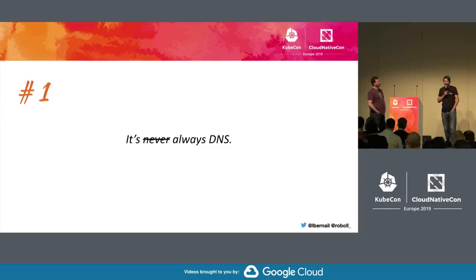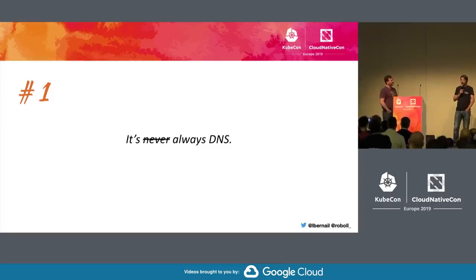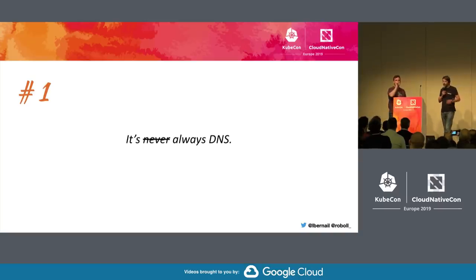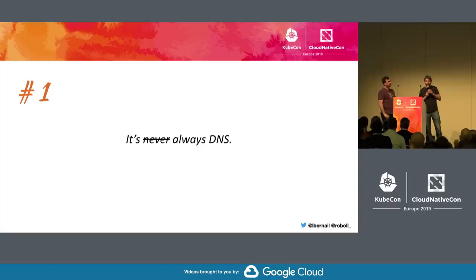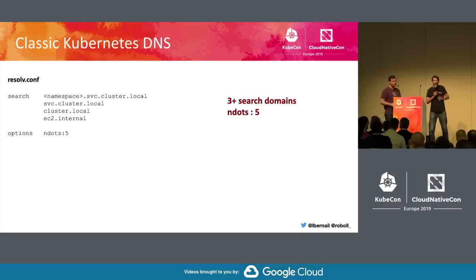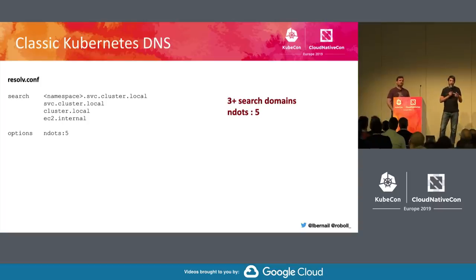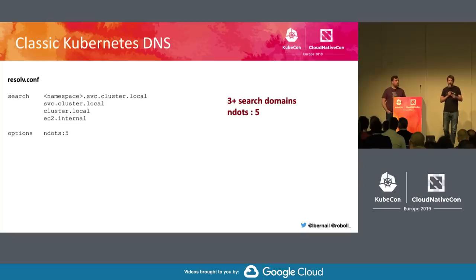The first time a team complained about DNS about a year ago, we figured there was a problem with the application and dismissed it. Turns out there are a lot of ways to break DNS in Kubernetes. A quick reminder: Kubernetes manages DNS by having the kubelet inject a resolv.conf file with search domains — namespace.service.cluster.local, service.cluster.local, cluster.local, and the host's search domain. There's also the ndots=5 option.